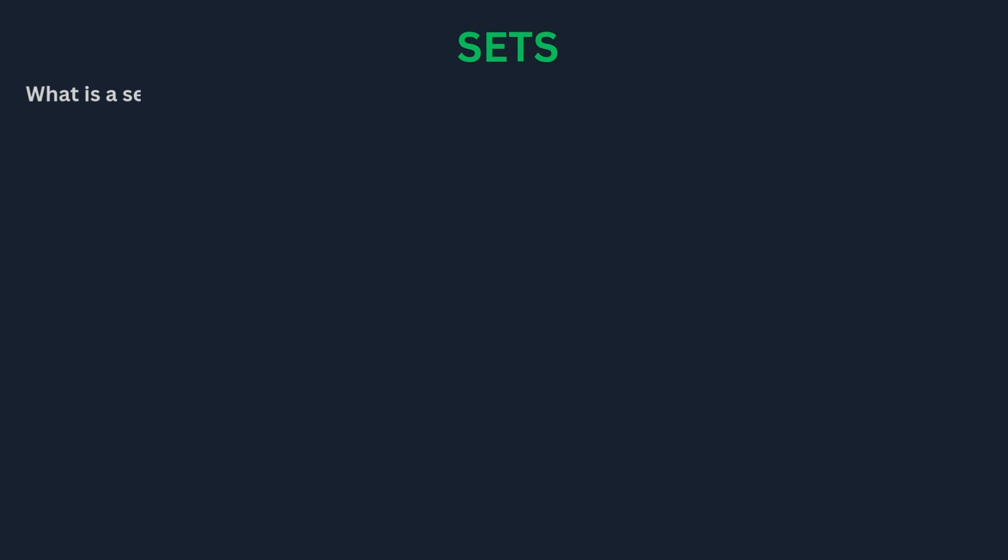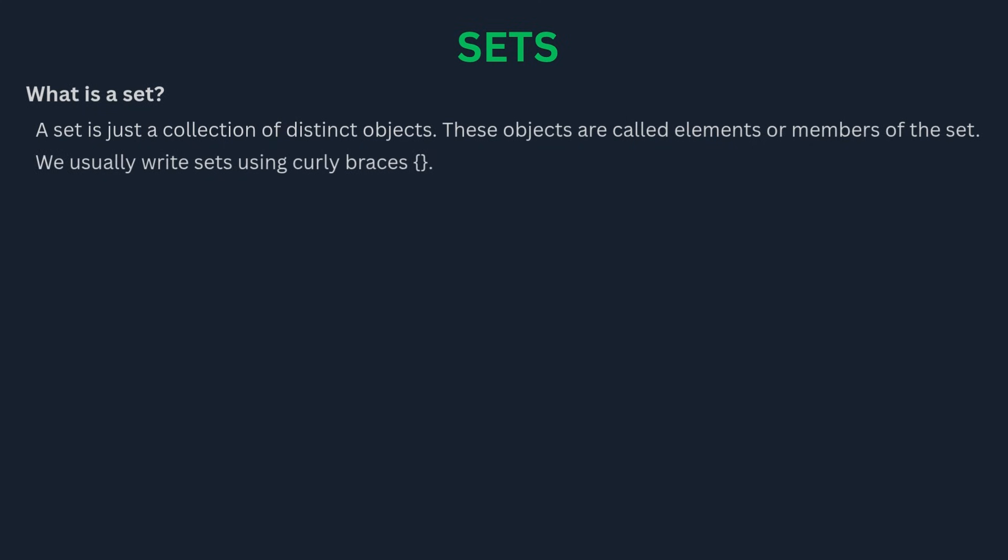Our second topic is sets. A set is simply a collection of distinct objects. These objects are called elements or members of the set. We usually represent sets using curly braces. For example, the set of even numbers less than 10 would be written like this. This set, which we'll call E, contains the elements 2, 4, 6, and 8. Notice that the order doesn't matter and each element is unique. There are a few special sets you should know. The empty set, written with a circle and a slash, is a set with no elements.